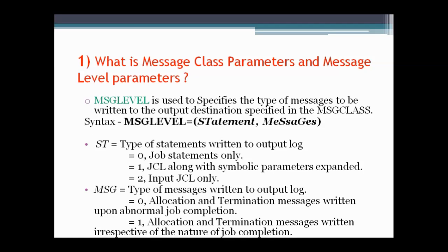Now, what is MESSAGE LABEL? MESSAGE LABEL is used to specify the type of messages to be written to the output destination specified in MESSAGE CLASS. The parameter for MESSAGE LABEL comes in two fields: the first one is 'statement' — the type of statement which will be written to the output log, with values varying from 0 to 2 — and the other one is 'message', where the value can vary from 0 to 1. The default parameter for MESSAGE LABEL is 1,1.